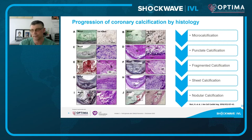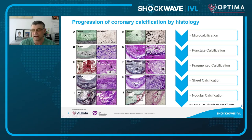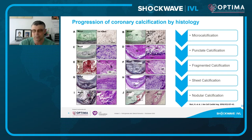The steps of calcification start from microcalcification — seen only under the microscope with von Kossa staining as an intense stipulated black stain. As it progresses, punctate calcification forms, then fragmented calcification appears near the outer rim of the necrotic core close to the media. This progresses into sheet-like calcification when the entire necrotic core is calcified. Finally, these sheets can break, producing nodular calcification. In rare cases of long-standing calcification, something similar to actual bone formation can be seen in the vessels.